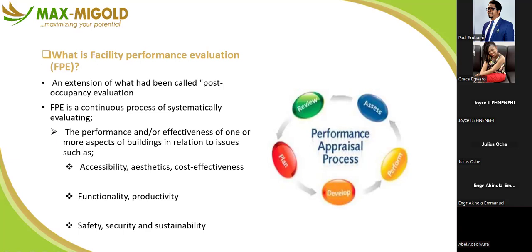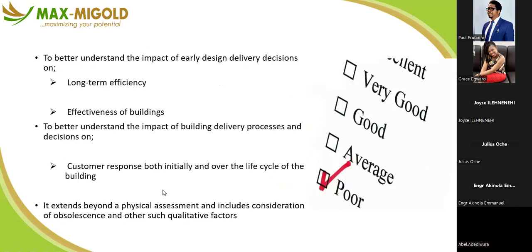FPE is a continuous process of systematic evaluating, while FCA is a one-off activity. It evaluates the performance and effectiveness of one or more aspects of the building in relation to issues such as accessibility, aesthetics, cost-effectiveness, functionality, productivity, safety, security, and sustainability. That is what performance evaluation covers.